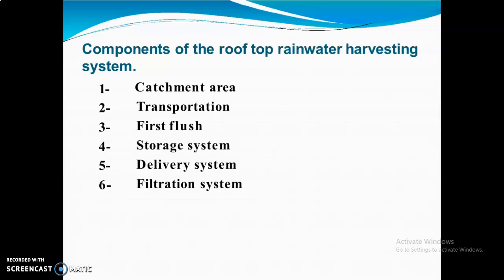What are the different components of rainwater harvesting? There are six main components of rooftop rainwater harvesting: first, catchment area; second, transportation; third, first flush; fourth, storage system; fifth, delivery system; and sixth, filtration system — through which water is used for our different purposes.